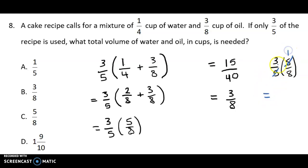So it would be 3 times 1, which is 3, and 8 times 1, which is 8. So we still obtain three-eighths.